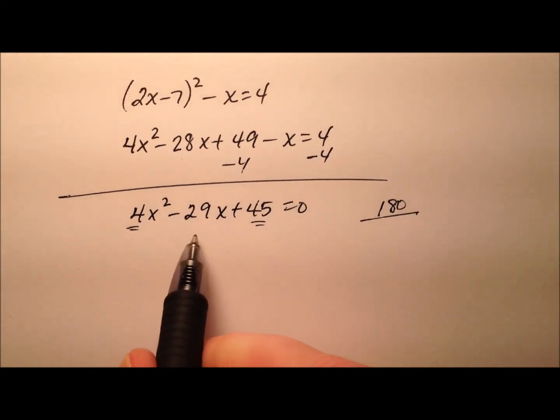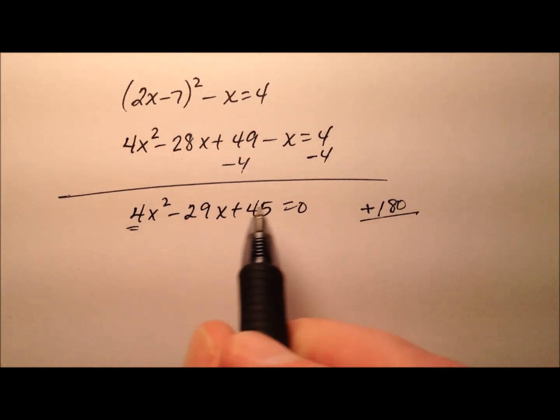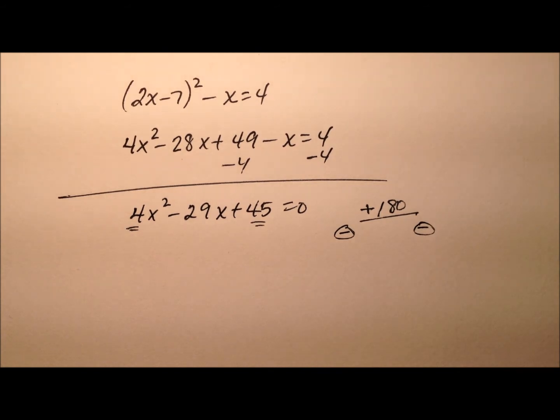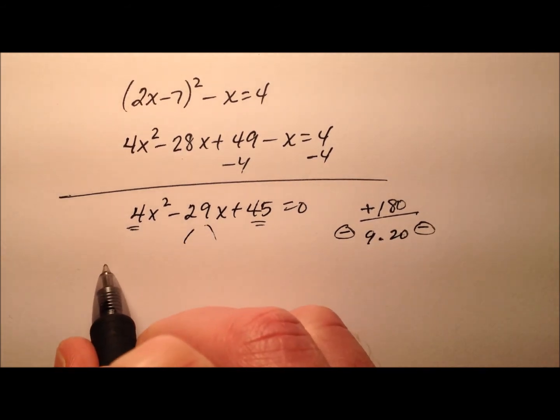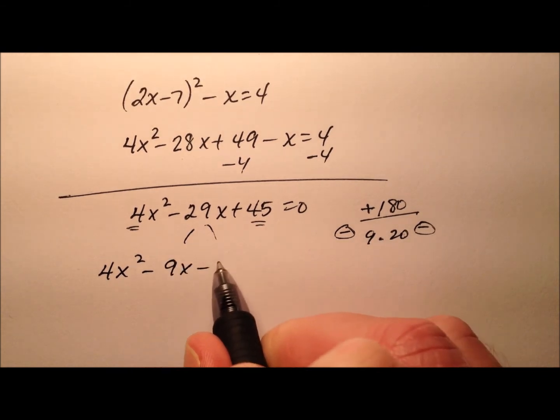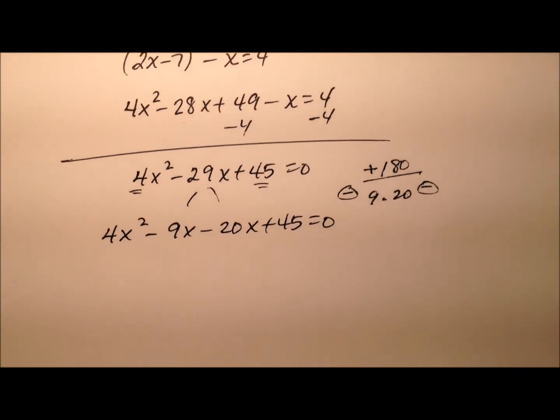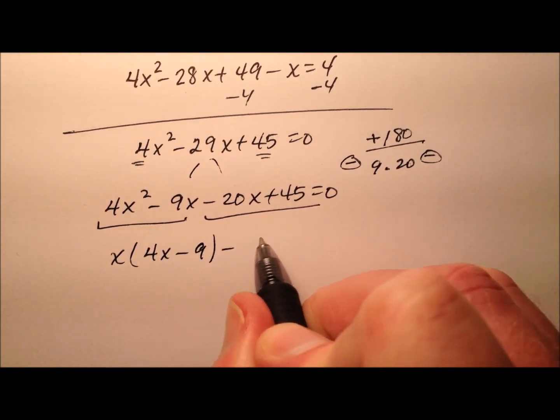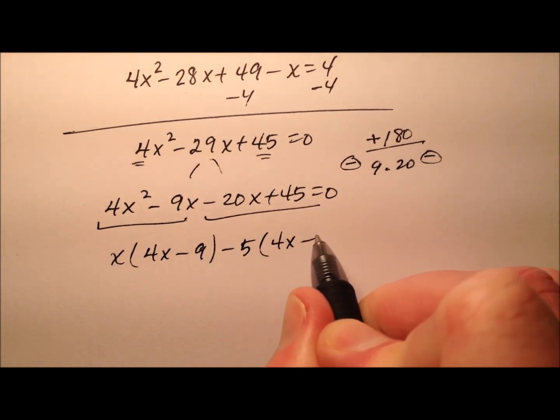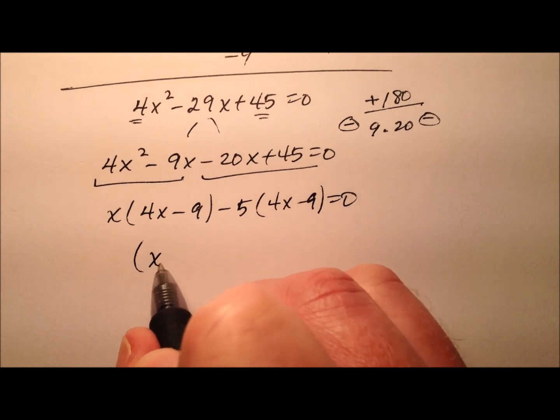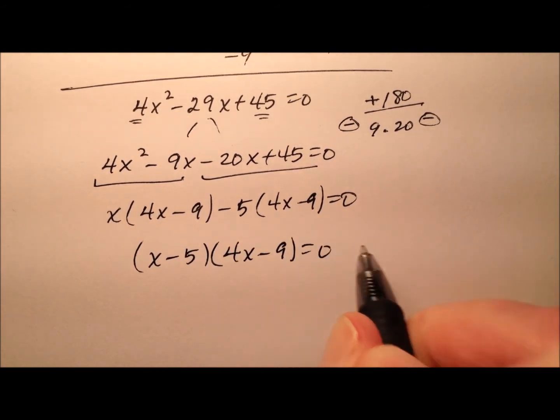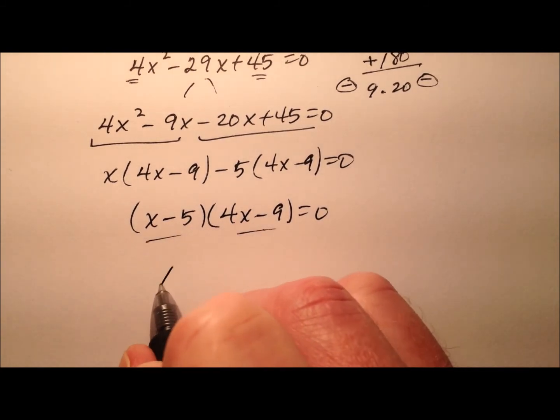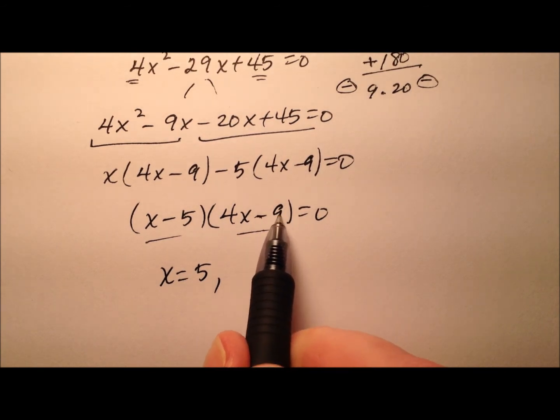So factors of 4 times 45 is 180. So factors of 180, and this will be a positive 180 that add to negative 29. That means it'll be negative and negative so both of these factors will be negative. So it looks like we could have something like 9 times 20, and 9 times 20 is 180 and negative 9 minus 20 is negative 29. So 4x squared minus 9x minus 20x plus 45 equals zero. So let's do our factor by grouping so an x can come out. And I'll say 4x minus 9. And then right here it looks like a negative 5 can come out. So 4x minus 9. When I factor it's x minus 5 and 4x minus 9.